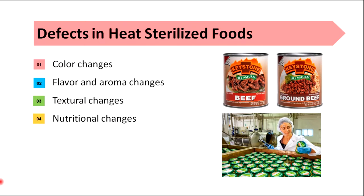Moreover, viscosity changes in milk can be observed due to modification of κ-casein. Also, nutritional changes such as loss of amino acids in meat due to protein coagulation, and loss of water-soluble vitamins and minerals in fruits and vegetables — especially ascorbic acid — can be observed during heat sterilization.